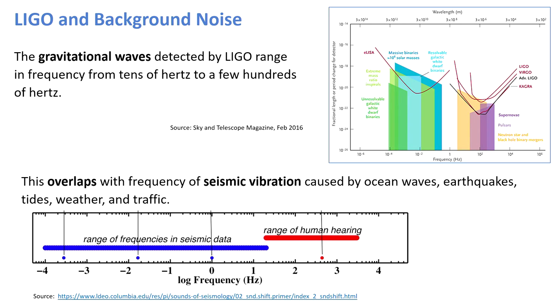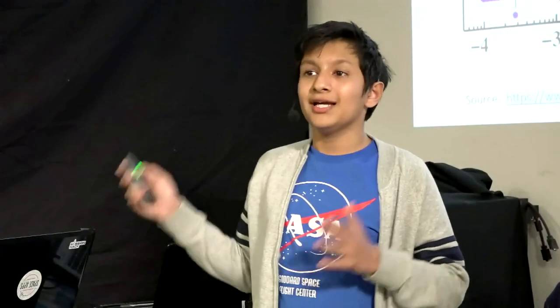These gravitational waves tend to come at a frequency of 10 to several hundred hertz. There are many other things that could affect LIGO's measurements — walking next to the observatory, a train passing, or seismic activity like tidal waves, tides, earthquakes, volcanic eruptions. All these come at a similar frequency as the gravitational waves. So for LIGO to work, we have to isolate the seismic vibrations to accurately detect gravitational waves.